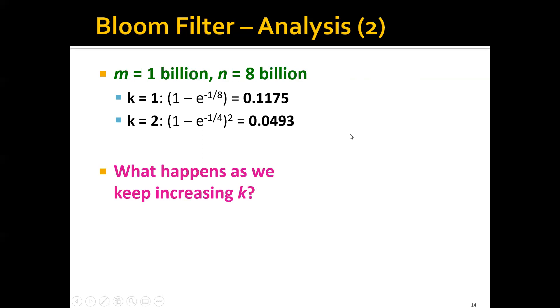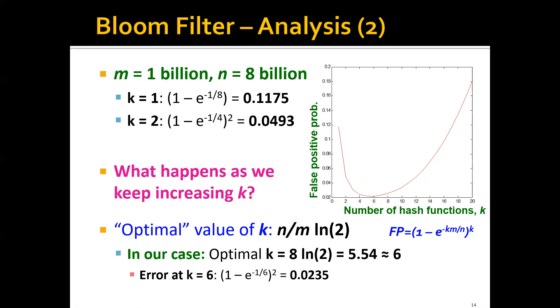Then naturally, you might be wondering, what if we keep increasing k? What would happen? You can see that if we keep increasing the number of hash functions k, the false positive probability will first go down and then go up again. Actually, with some simple calculation, we can see that we have an optimal value of k. This optimal value of k equals (n/m)×ln(2). In our case here, the optimal k is actually 8×ln(2), which is equal to 5.54. Since k can only be an integer, we will set k to 6. The false positive probability when k equals 6 would be 0.0235. We can see that this is a lot smaller than the original version when we have only one hash function.